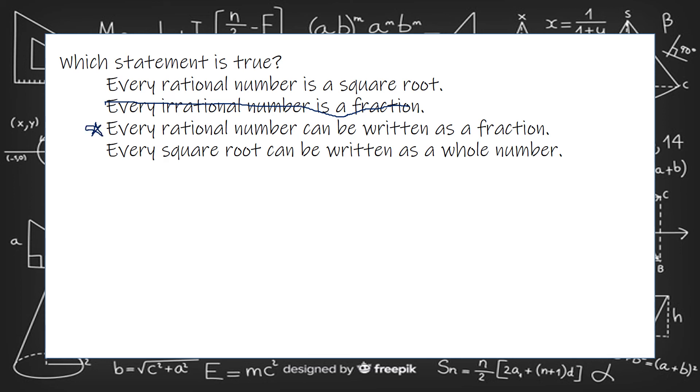Every square root can be written as a whole number. Well, we know that that's not true, because what about the square root of 3? So that's not true. And every rational number is a square root. Going back to that first one, every rational number is not a square root. The square root of 3 would not be a rational number.